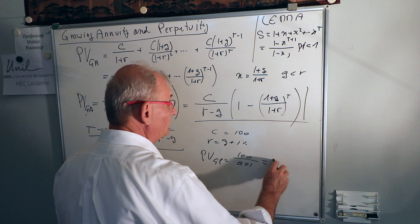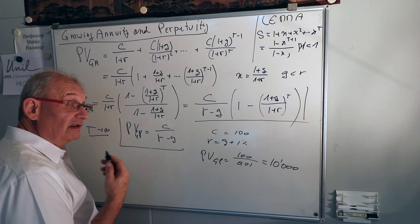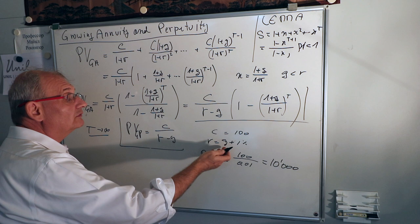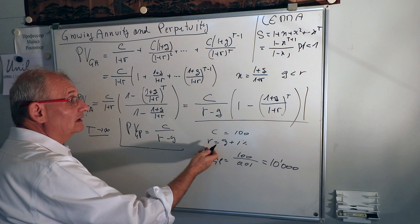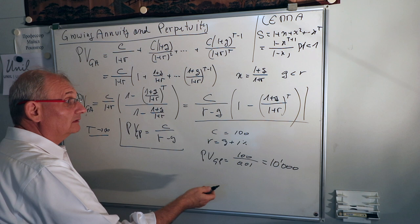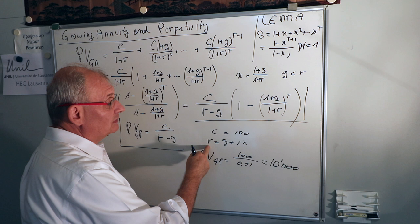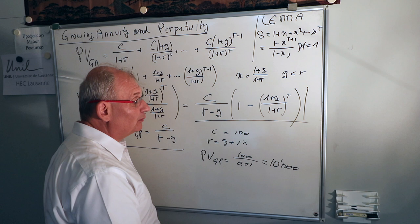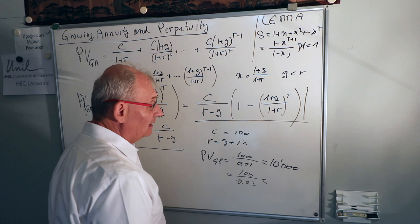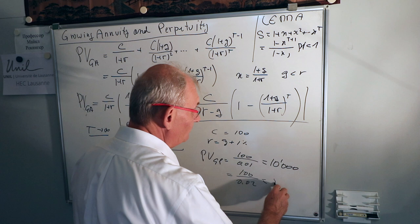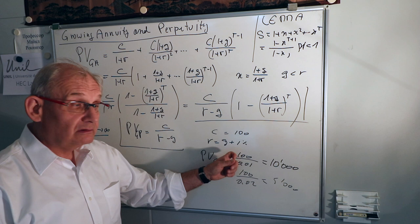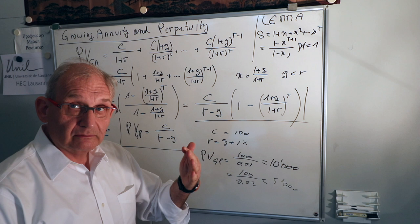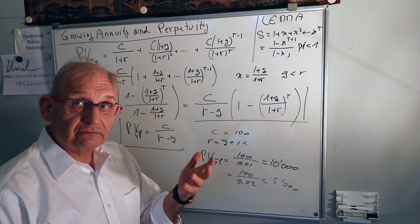Suppose r is equal to g plus 1 percent — say r is 10% and g is 9%. Then PV equals 100 divided by 0.01, giving 10,000. But if the growth rate is actually only 8% instead of 9%, the difference r minus g becomes 2%, and PV becomes 100 divided by 0.02, giving only 5,000. Small uncertainties in the denominator have dramatic consequences for value, which justifies why firm valuations oscillate heavily — the smallest piece of news can have a big impact on prices.